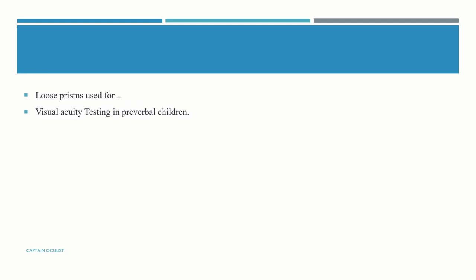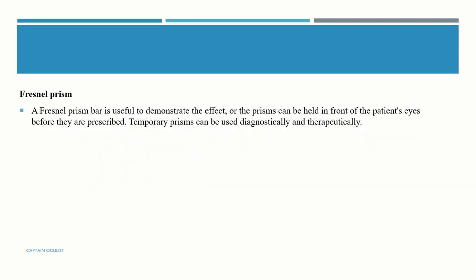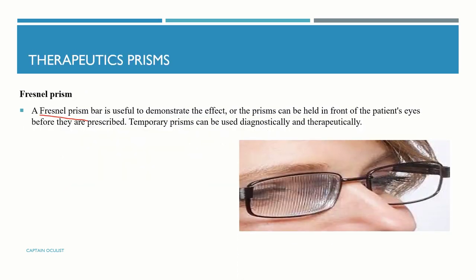Loose prisms are used for visual acuity testing in pre-verbal children. The TEN test is similar and can be used regardless of whether a manifest squint is present. It involves the promotion of diplopia using a 10-diopter vertical prism. The alternation between the diplopic targets suggests equal visual acuity. Temporary prisms can also be used diagnostically and therapeutically.